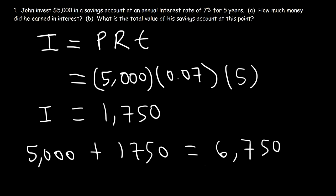So that's how much money he has in the account at the end of 5 years, using the simple interest formula. So this is the answer for part B, and this is the answer for part A.